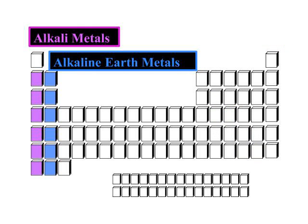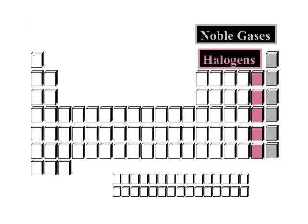Some of your groups have unique names that you're responsible for. Group 1 are the alkali metals — of course, hydrogen is not an alkali metal even though it is a member of group 1. Group 2 are the alkaline earth metals. They are less reactive than the alkali metals.